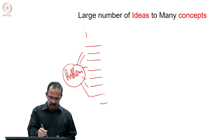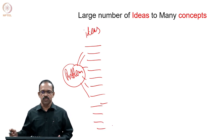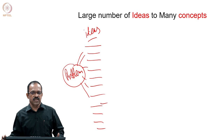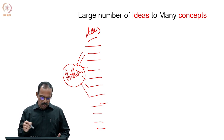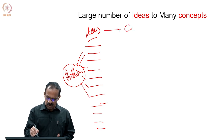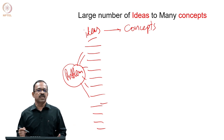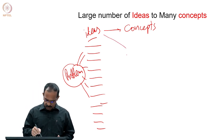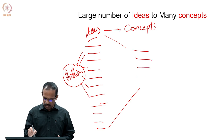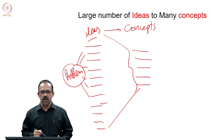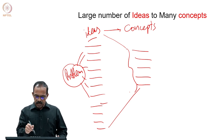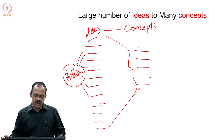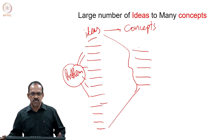You will have a large number of ideas to solve a problem, and these ideas come from the idea generation exercises we discussed. Now, we will convert these into concepts. The team will work together, look at these ideas, and see how they can be converted into a few concepts — some very good concepts that can actually solve the problem. But these concepts may number around 10 to 15 for one problem.